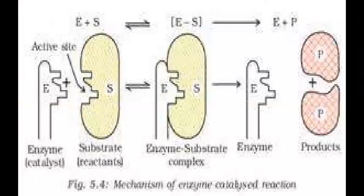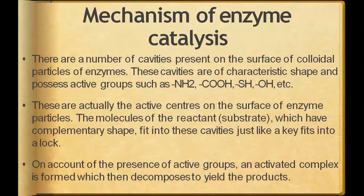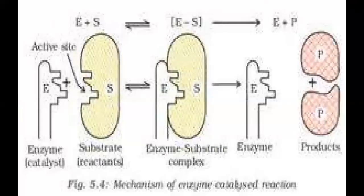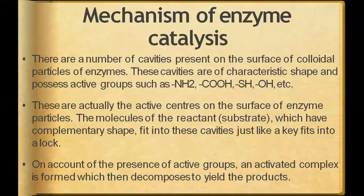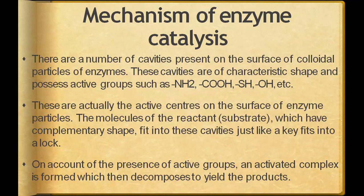There are specific types of cavities, as you can see in this diagram, which are present on the enzyme that make it specific. To react with this enzyme, we require a substrate into whose cavity the enzyme can fit and proceed the reaction. These are actually the active centers on the surface of enzyme particles. The molecules of reactants — called substrate in biological reactions — have complementary shape to fit into these cavities, just like a key fits into a lock.